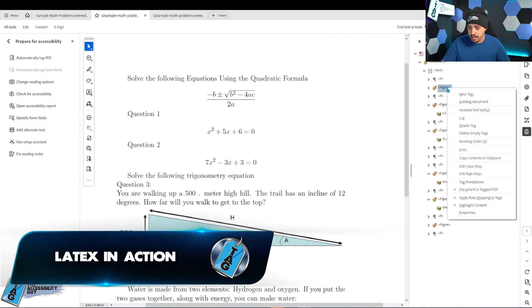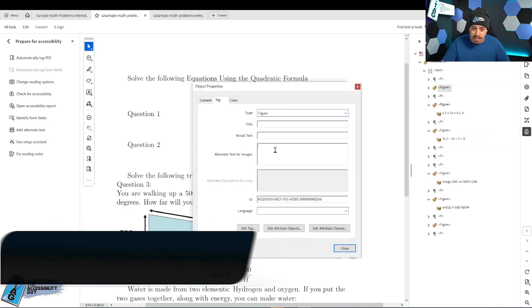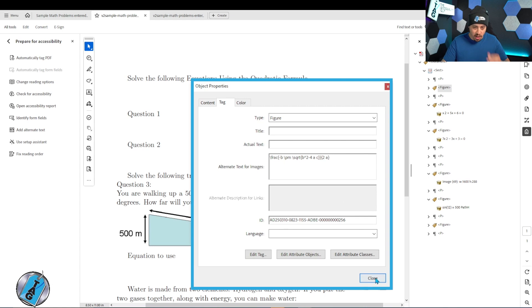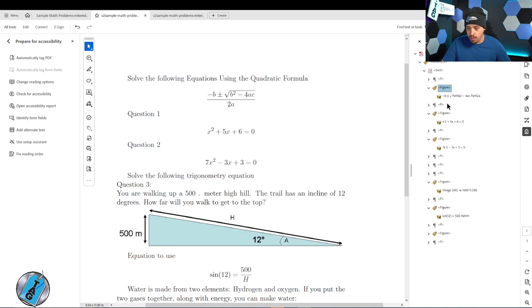And what we're going to do is right click the figure tag, select properties, and we can put in this alt text for images there. And that is one method that we can do to make sure that is tagged appropriately.